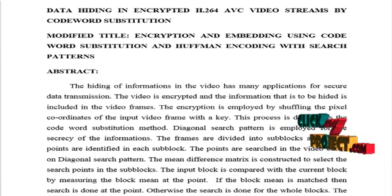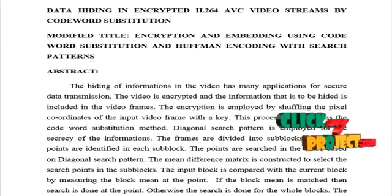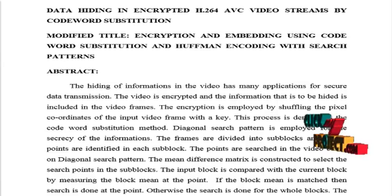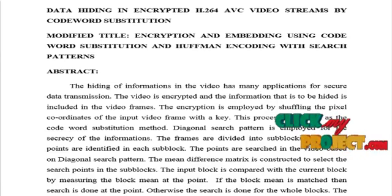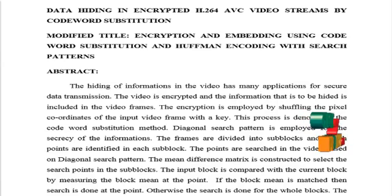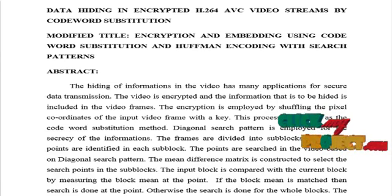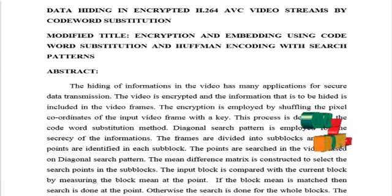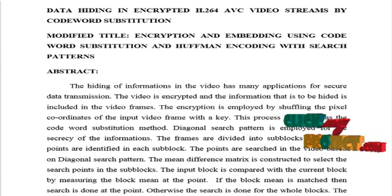Authorized persons alone can decrypt the frames and the decrypted images are reversed. Input frames in the video are decoded using Huffman in order to obtain the messages, and the search patterns are reversed to find the original image pixels in the encrypted video frames. Thus, the obtained key-based codeword substitution is reversed in order to obtain the original image pixels.